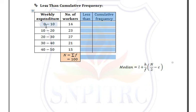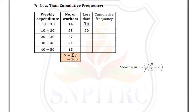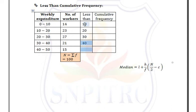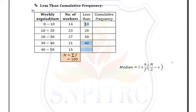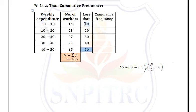Here we have classes 0–10, 10–20, 20–30, 30–40, and 40–50. For less than form, we use less than 10, less than 20, less than 30, less than 40, and less than 50. When defining cumulative frequency, we consider the upper limit.